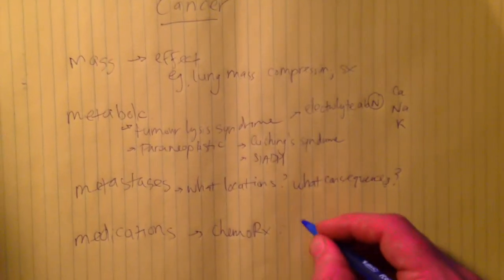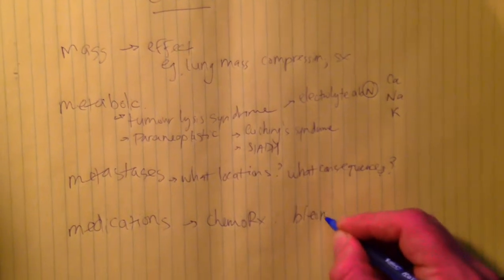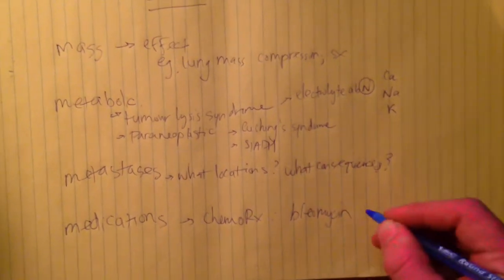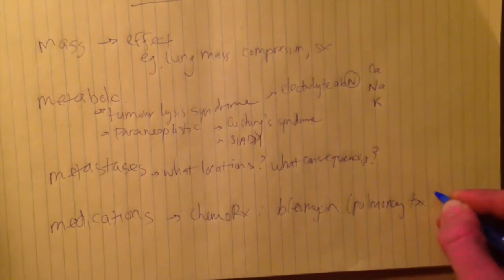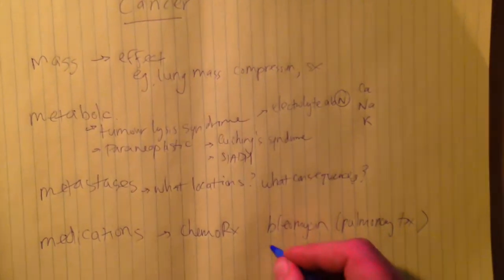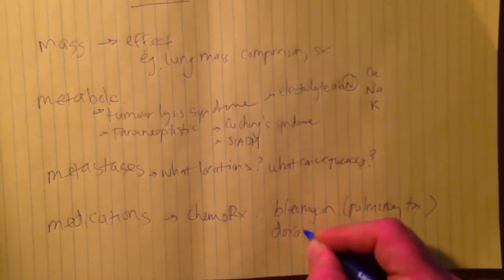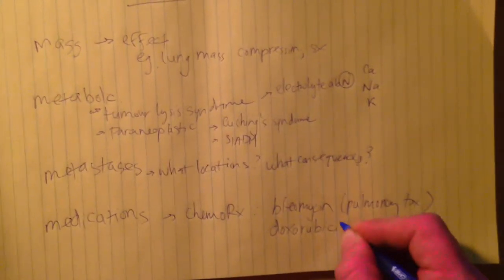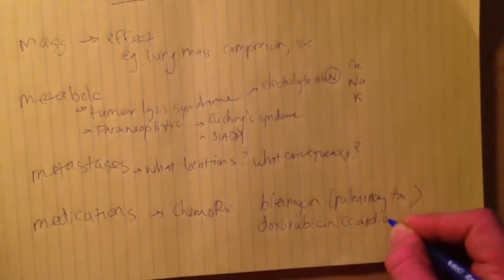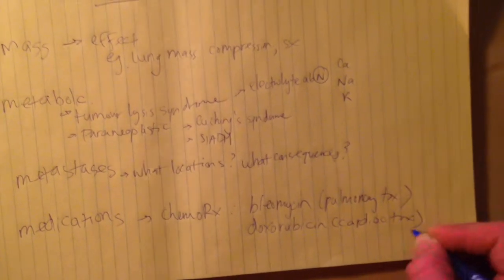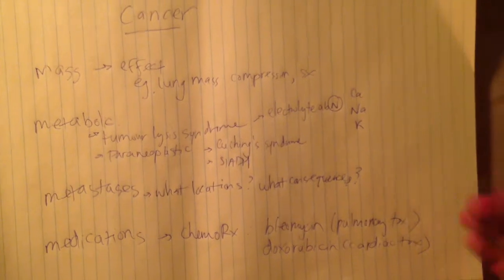The most common example being bleomycin, having pulmonary toxicity and doxorubicin, having cardiac toxicity and whether that's going to affect your anesthetic.